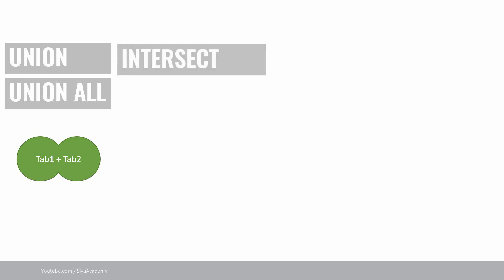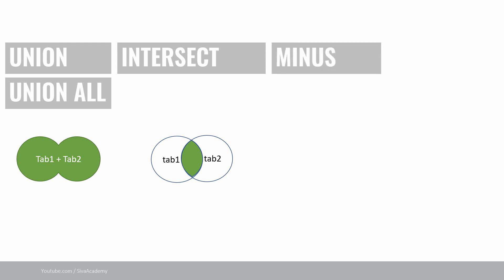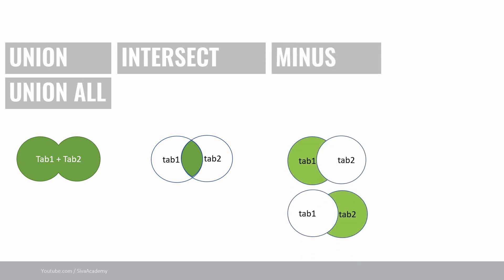The next set operator is intersect, which returns the common data between two result sets. If there is any duplicate, it will be removed and the data will be sorted. The next set operator is minus, which returns the data from one result set excluding the data from the other. For example, if you say select star from table1 minus select star from table2, you will get the data from table1 excluding the data from table2.